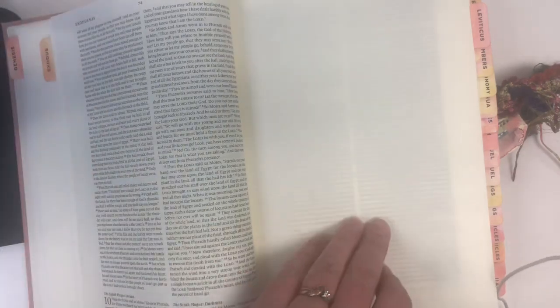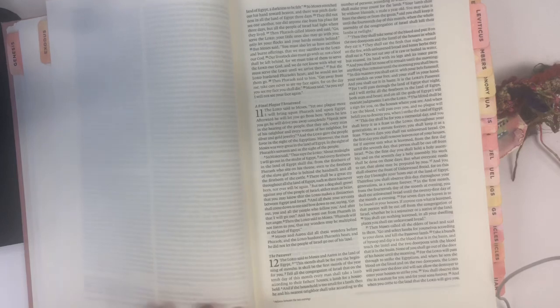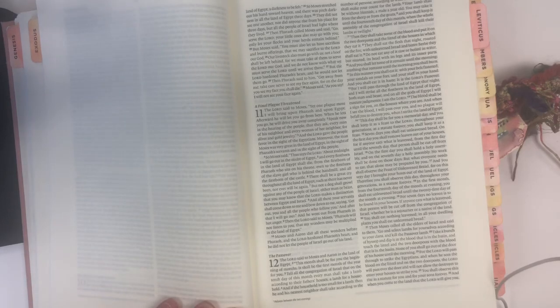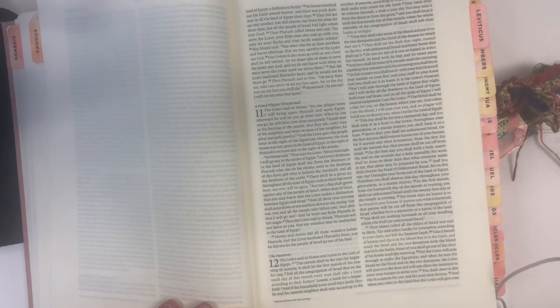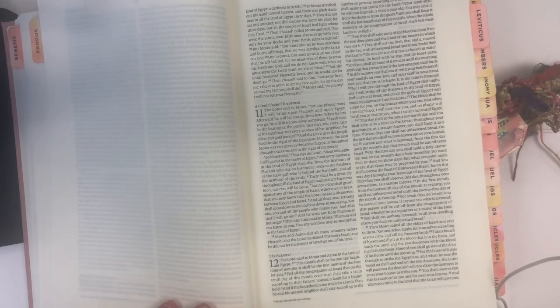So chapter 10 goes through the eighth plague of the locusts, the ninth plague of darkness, and then of course that last and final threat, which was the death of all of the firstborn, which would have included Pharaoh's own son.